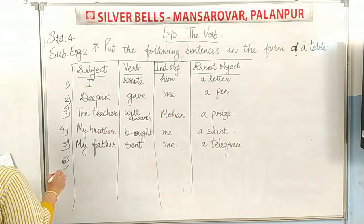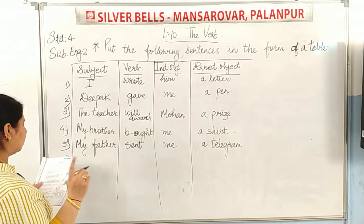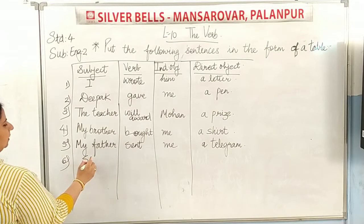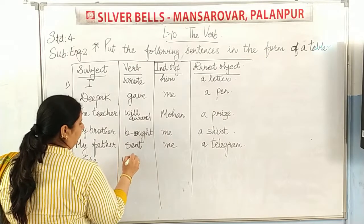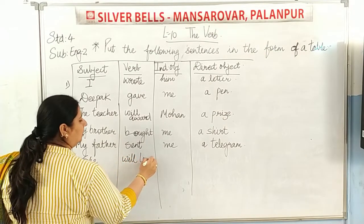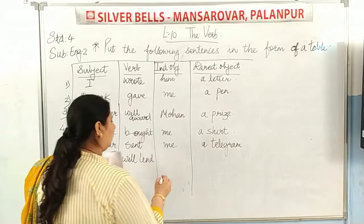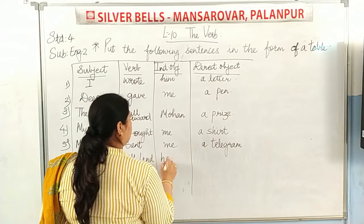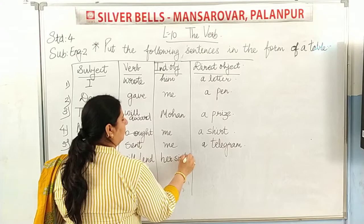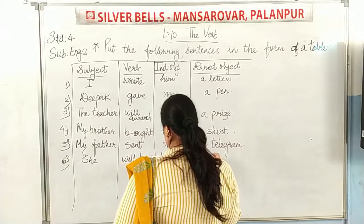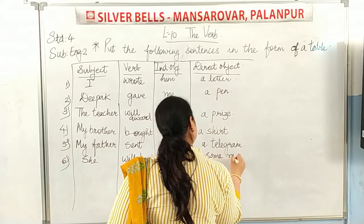Now sixth: 'She will lend her sister some money.' She is the subject, will lend is the verb, her sister is the indirect object, and some money is the direct object.